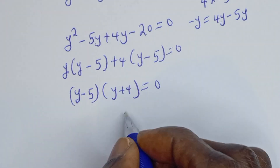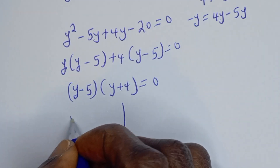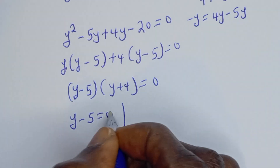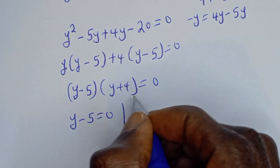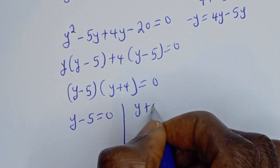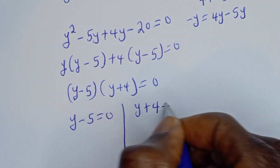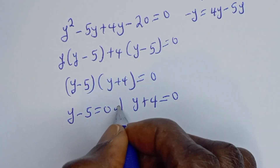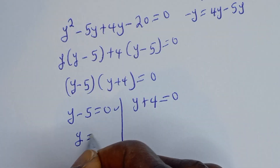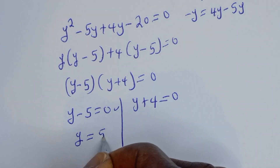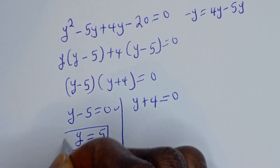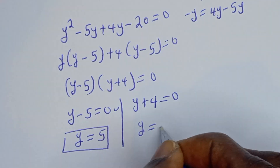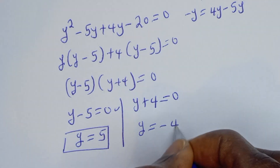Now there are two cases. The first case is y minus 5 is equal to 0, and the second case is y plus 4 is equal to 0. From the first case, y is equal to 5. From the second case, y is equal to minus 4.